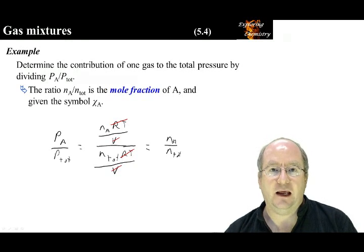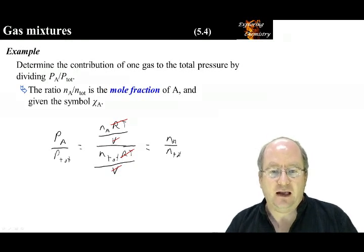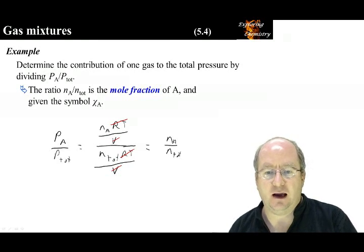And what we are left with is number of moles of A over the number of moles total. That ratio, nA over n total, is called the mole fraction of A and is given by the symbol chi A.